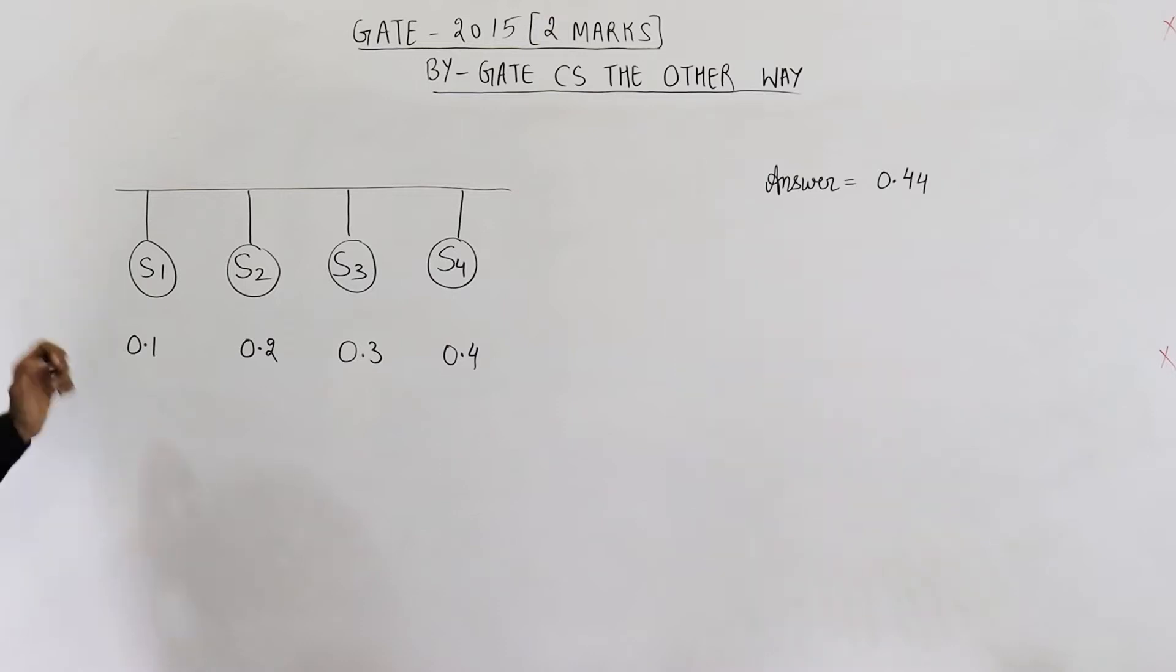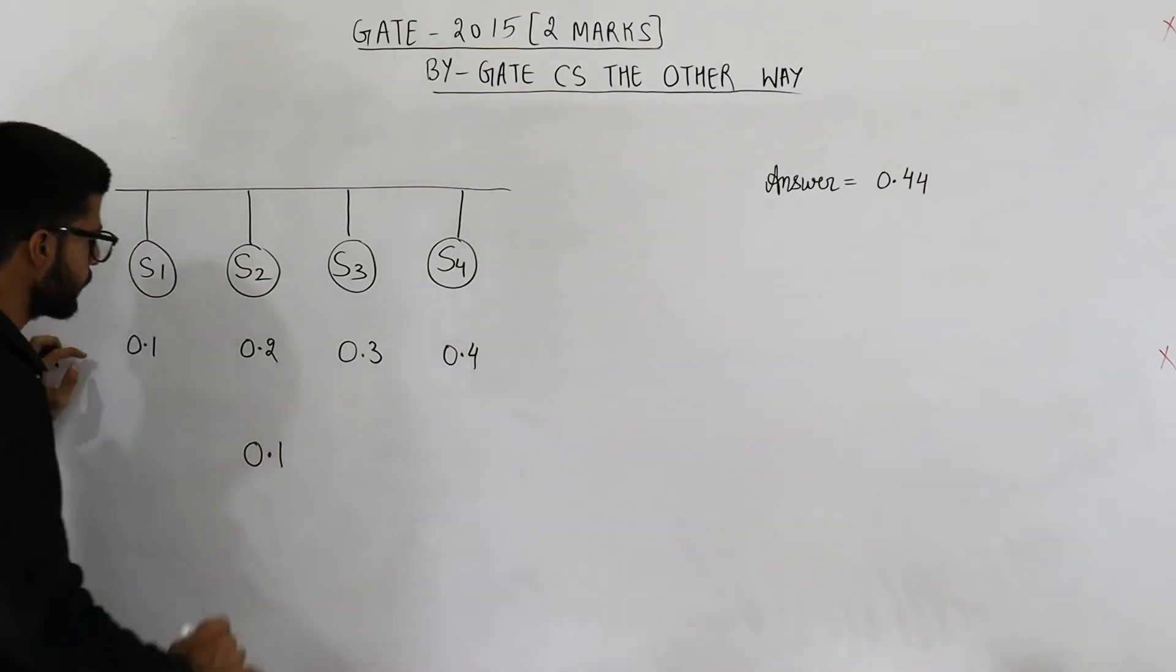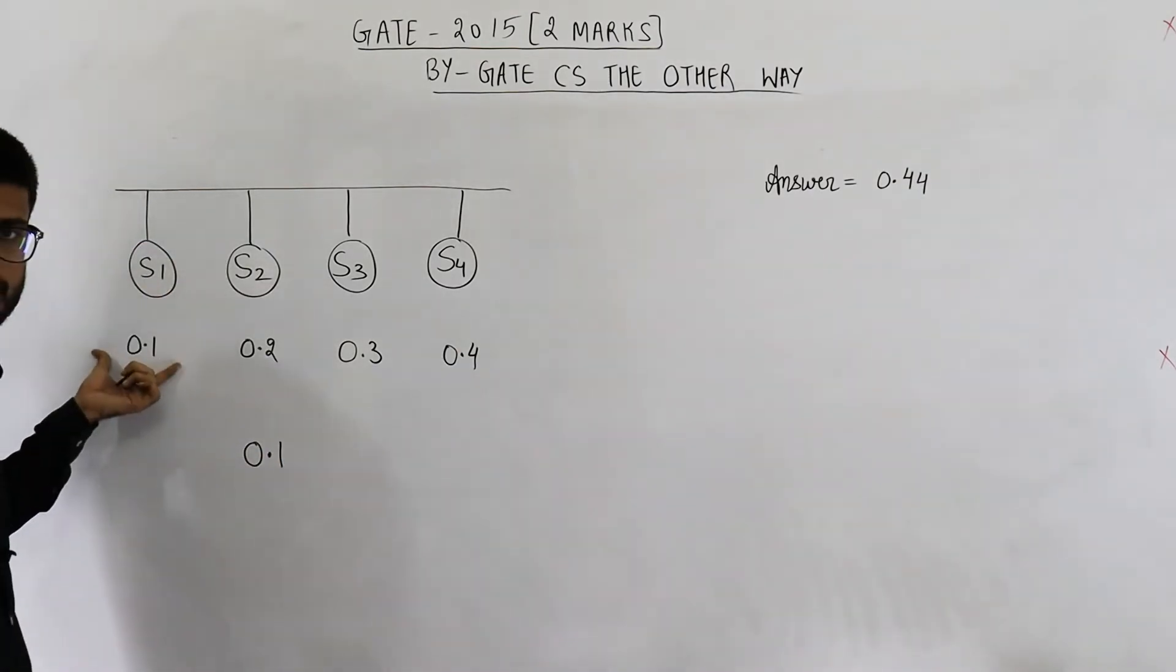Now let's find out the probability of this event. See, first method says only S1 must send data. Only S1 is sending data means the probability will be 0.1 because S1 is sending data with this probability.